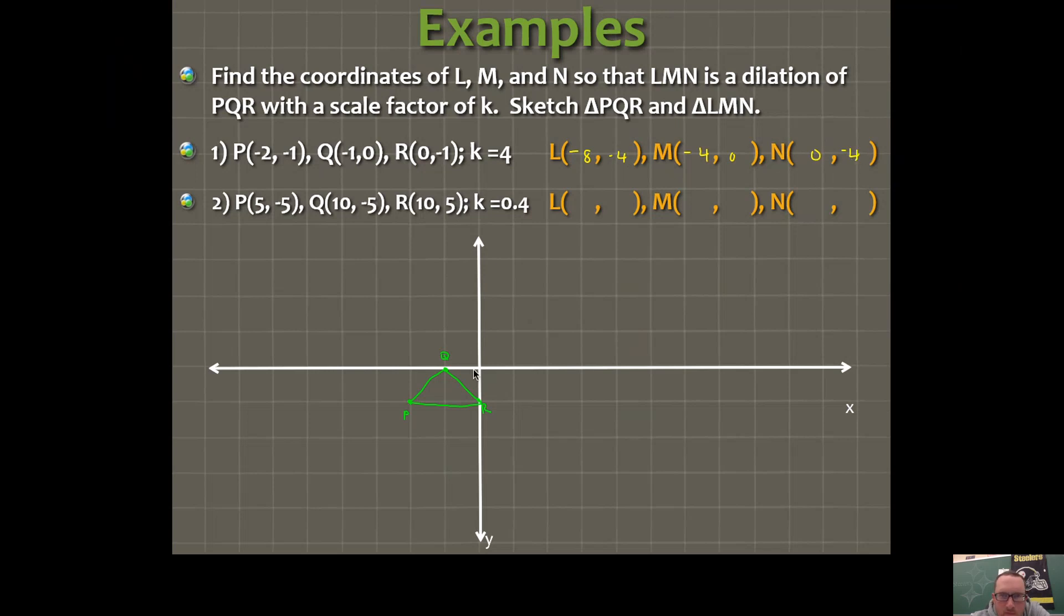So there's point L. There's point M. And then here's point N. These two triangles, the green one and the yellow one, are guaranteed to be similar. So that's number one.